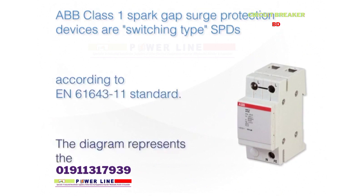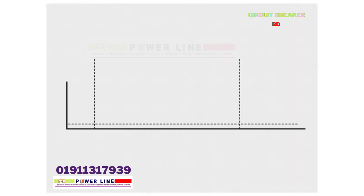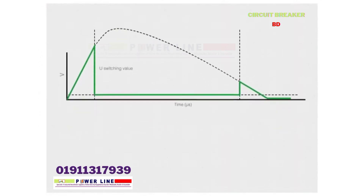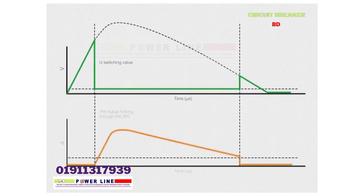The diagram represents the tripping characteristic of these devices. As seen from the figure, at the occurrence of a certain level of overvoltage — the switching value — the voltage across the module collapses suddenly to just a few volts, the value corresponding to the arc voltage.